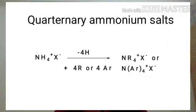Besides these, there are quaternary amine salts, which are actually derivatives of ammonium salt. Ammonium salt has the molecular formula NH4+ X−, where X− can be a halide ion, a hydroxide ion, or any simple ionic radical. By replacing all four hydrogen atoms of an ammonium ion with alkyl or aryl groups, we get a quaternary ammonium salt. These are the main classifications of amines.